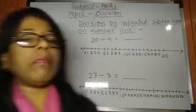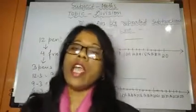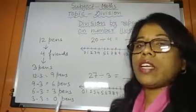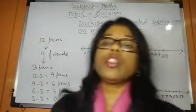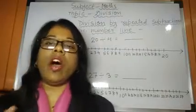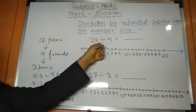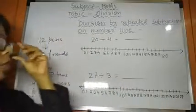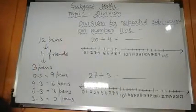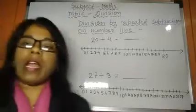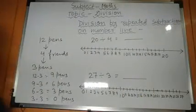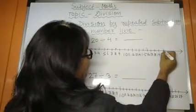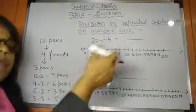So, division by repeated subtraction. You have to repeat the subtraction till you get the result 0. This thing we will see on number line. We have number 20 divided by 4. We have to find it with the help of number line, repeated subtraction on number line. We will start from 20 and we will go skip backward.